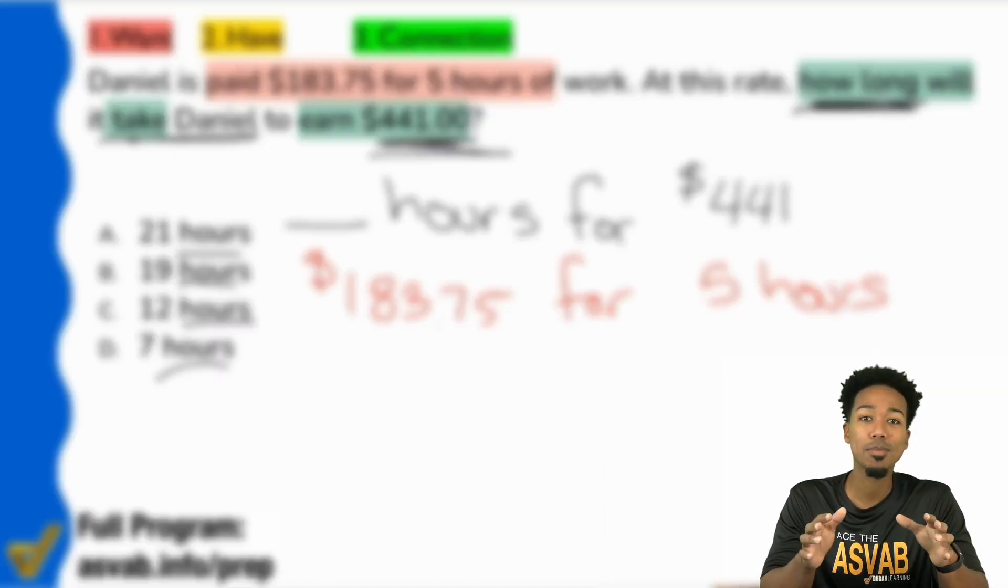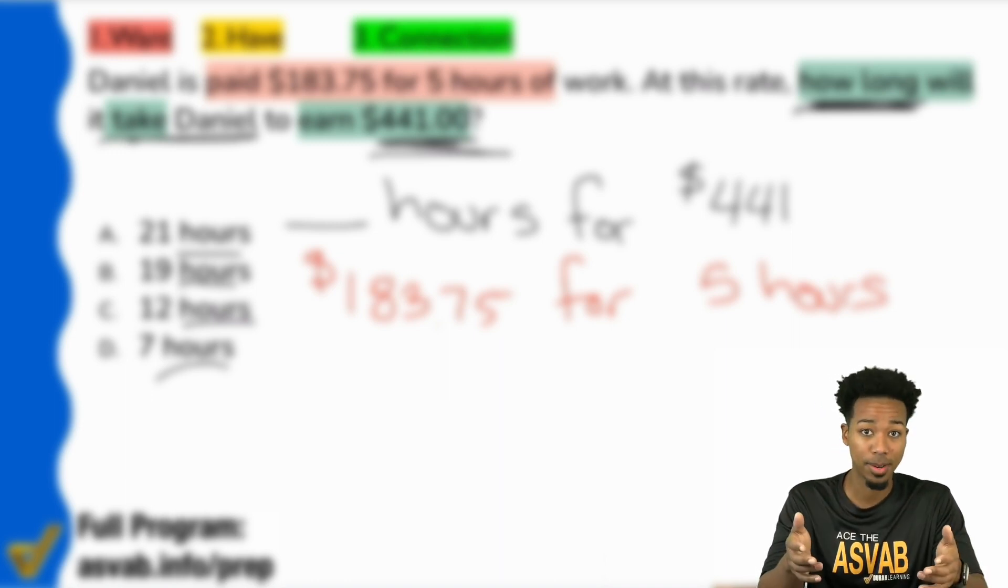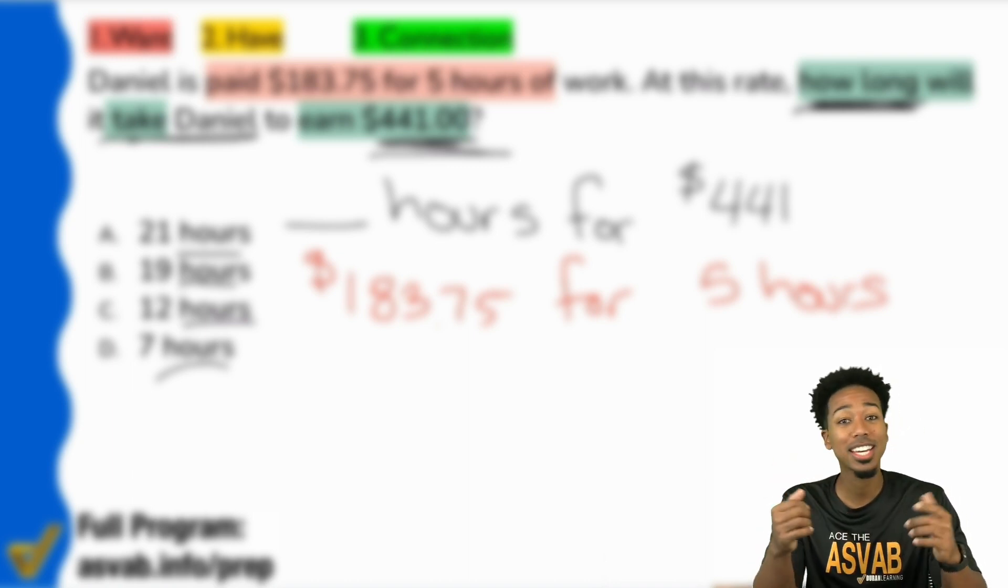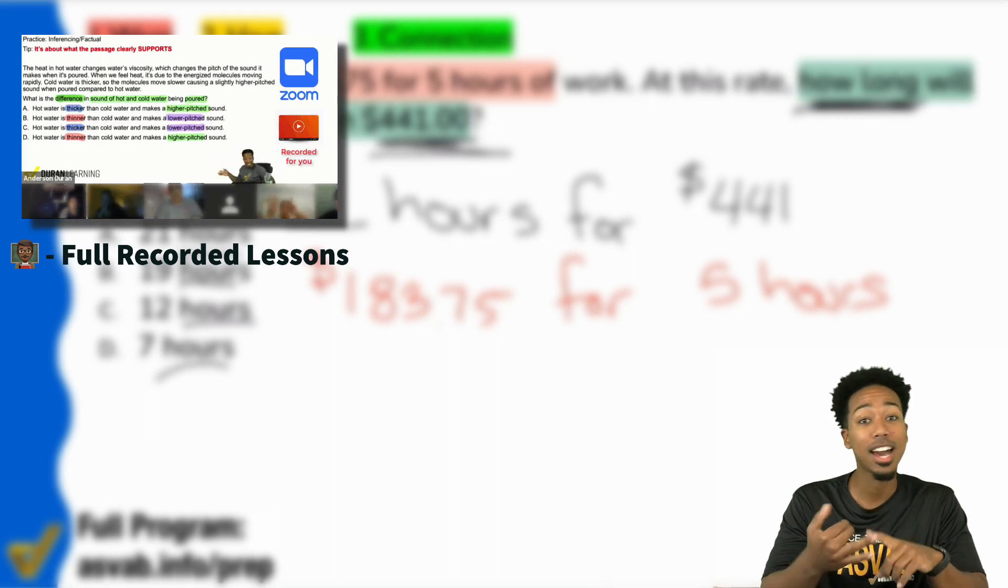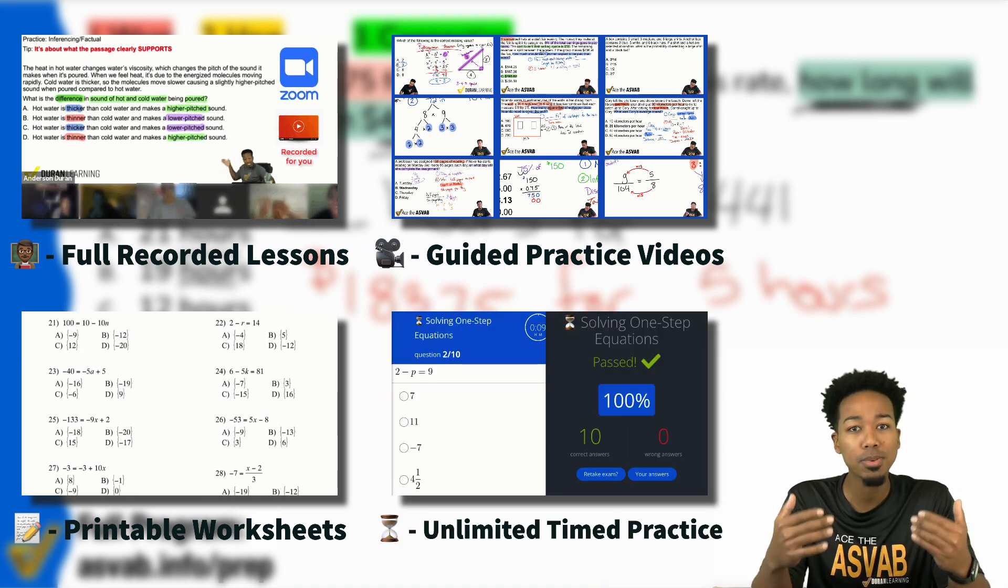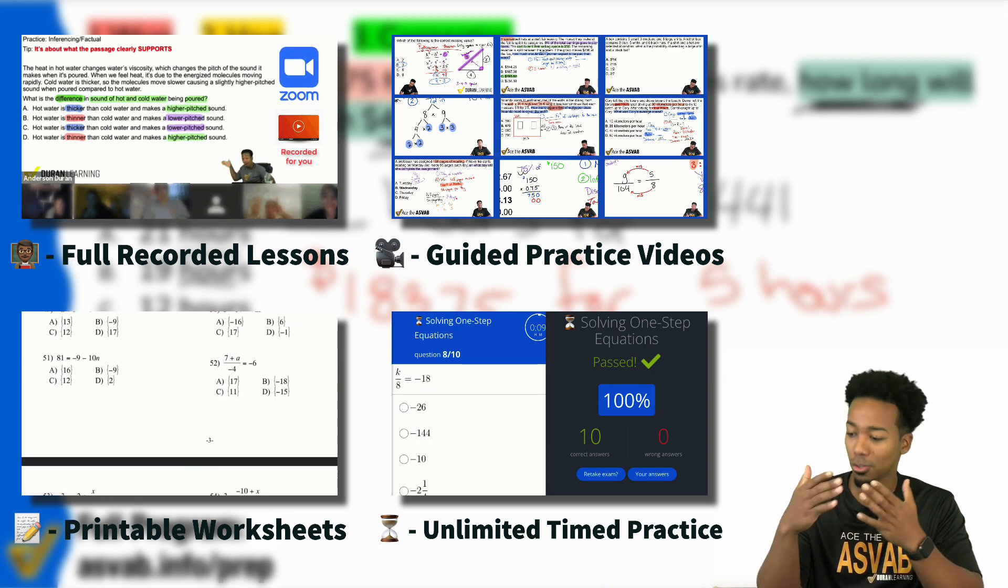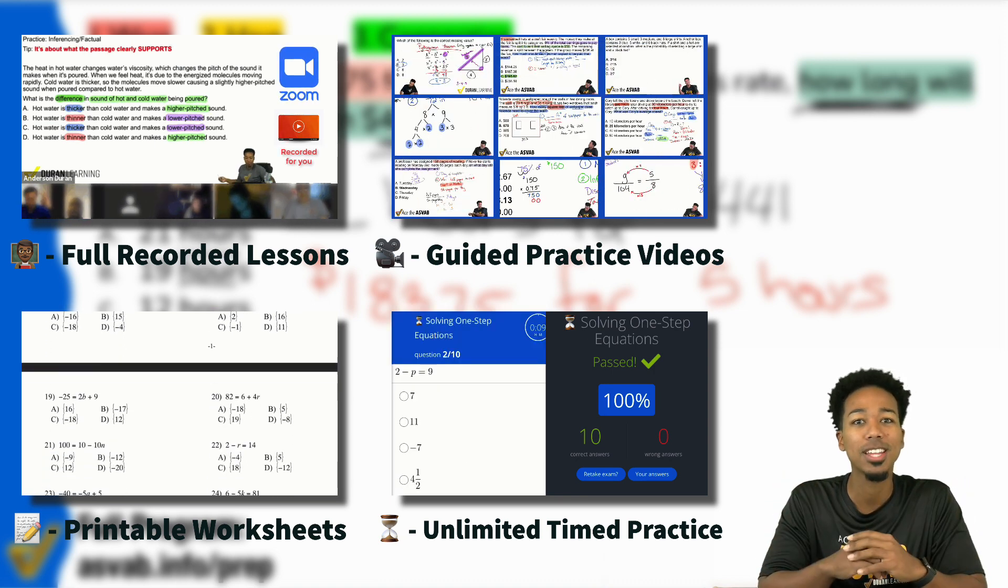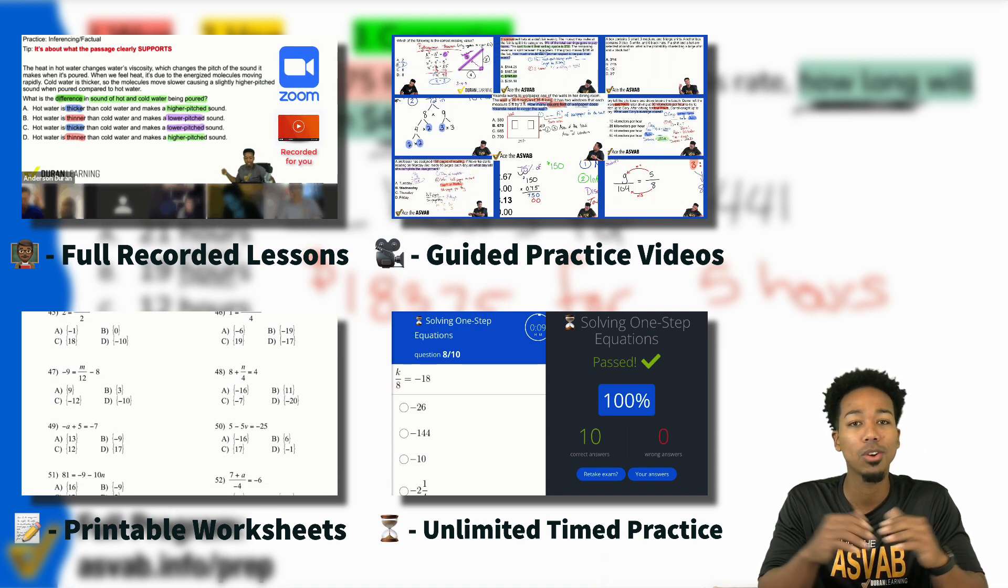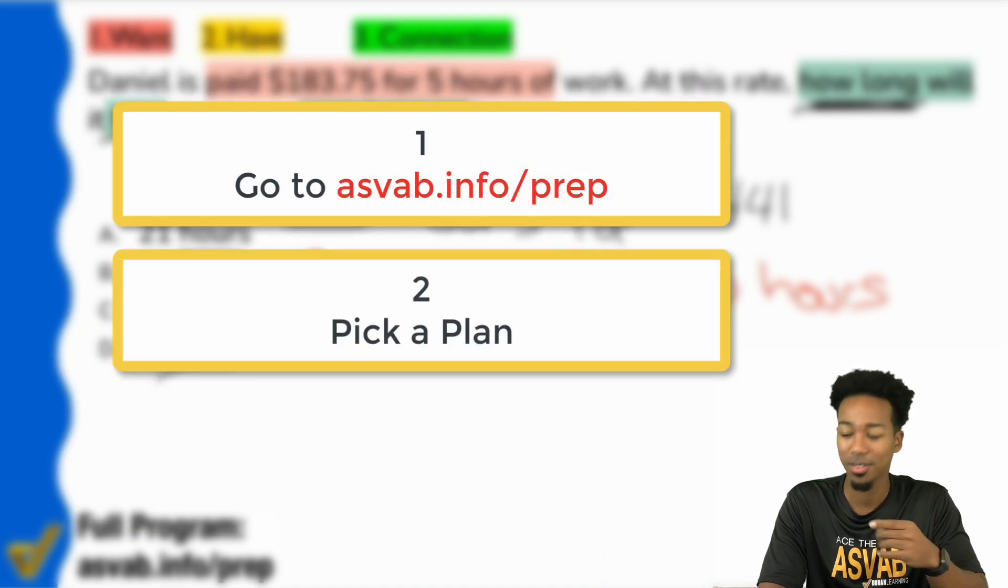And really quick, before we continue my math part people, I know you're enjoying this and you can have thousands of problems just like this in our program. In our program, you have four main things to help you succeed: recorded lessons, guided practice just like this, worksheets that you can print out, and speed drills to raise your confidence. That way, when you take the test, there's no test anxiety because you've been timed before. All of that's included in our program and more. So click the link in this video or in the description to learn about the program. Sign up now. Let's get going and let's get back to the problem.